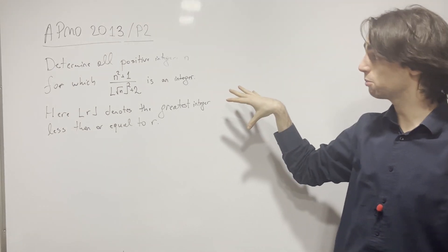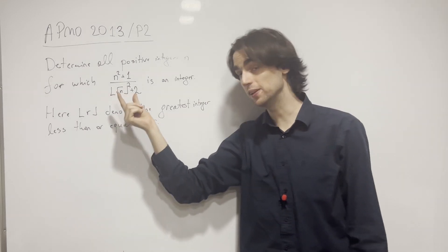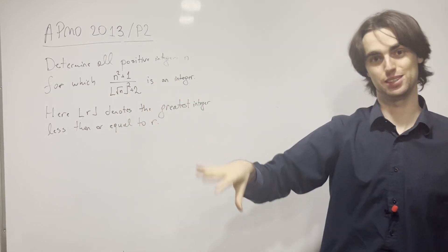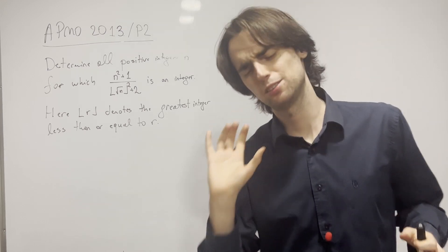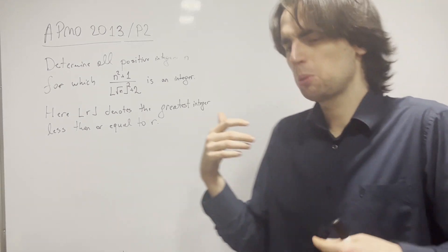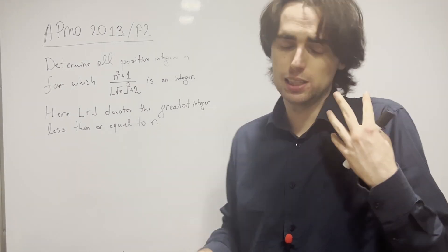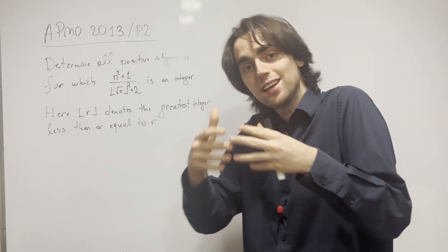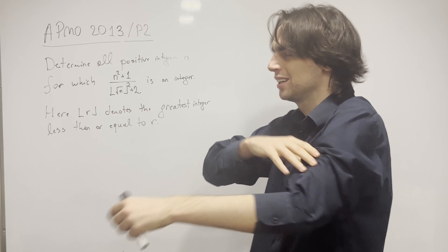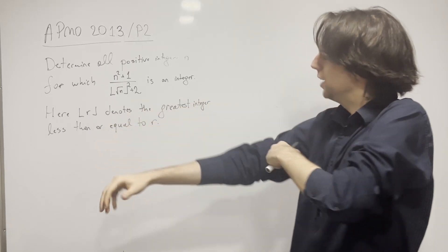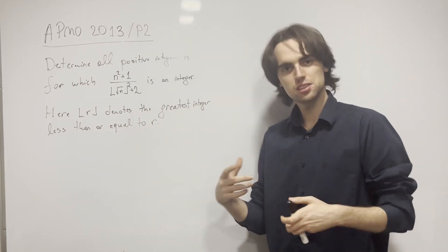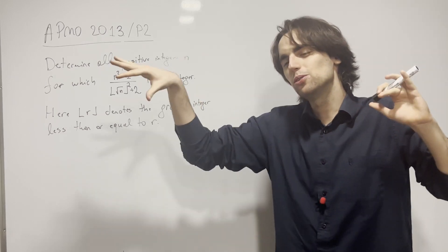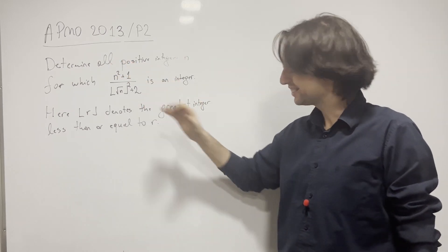This is a phenomenal number theory problem to try out if you've never dealt with the floor of something, especially the square root under it as well. Especially if you're getting somewhat comfortable with divisibility, with number theory and stuff like that, if you feel like you can take it to the next level. You've done a couple of junior level competitions, you want to go to the next one, and you're feeling decently comfortable but don't want to try something too hard — that's a great problem.